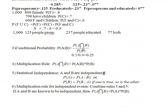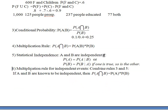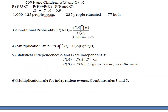We have the conditional probability rule to calculate the probability of A given B, and we rewrite it slightly to get the multiplication rule — they're the same thing, just written differently. A very important idea here is statistical independence. The technical definition is that the probability of A is the same thing as the probability of A given B. Equivalently, the probability of B is the same as the probability of B given A.